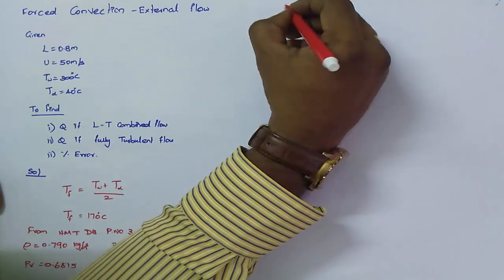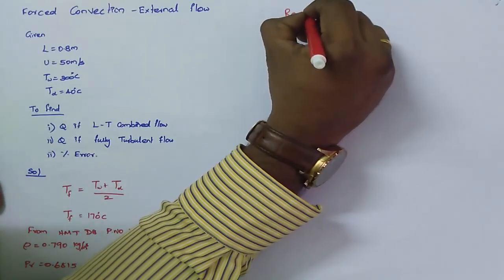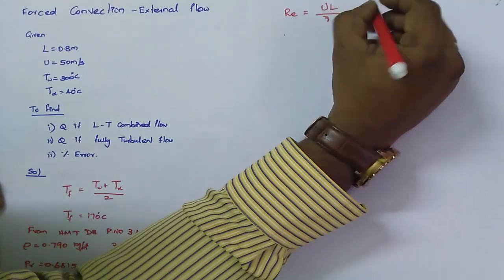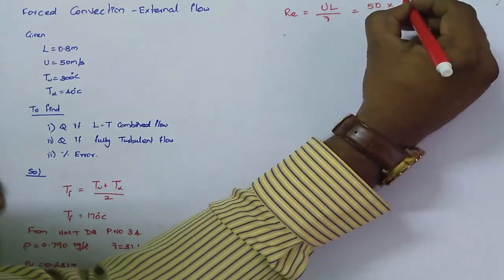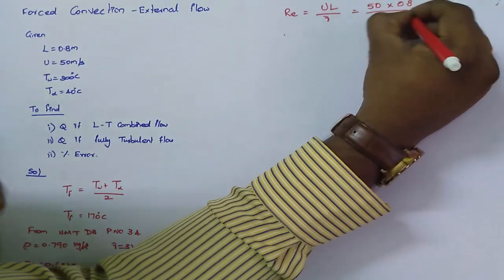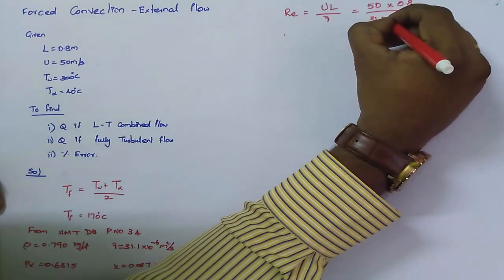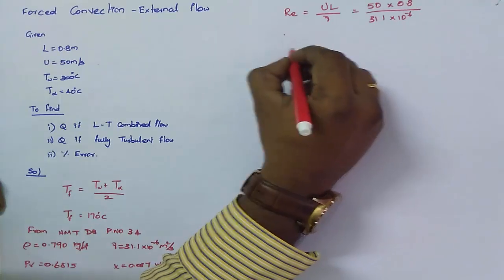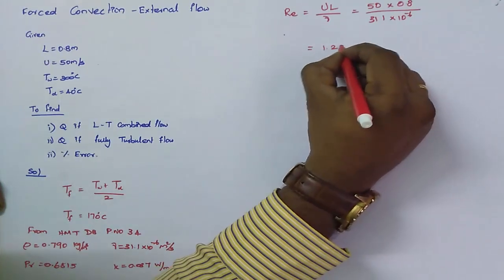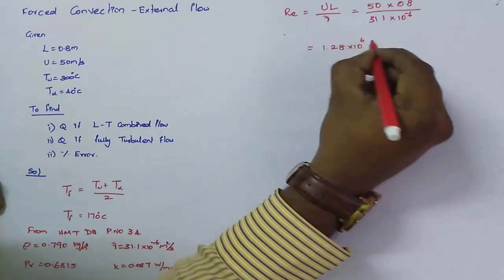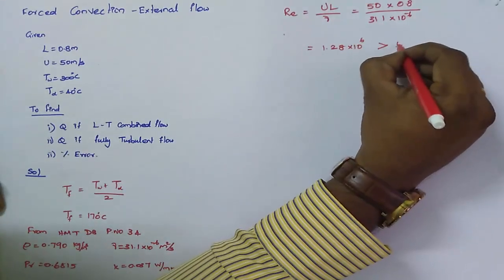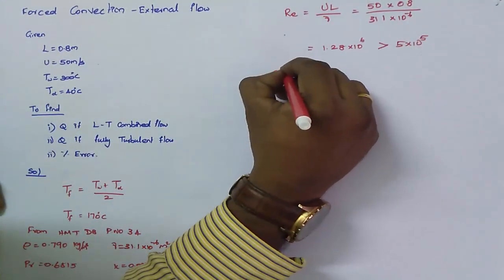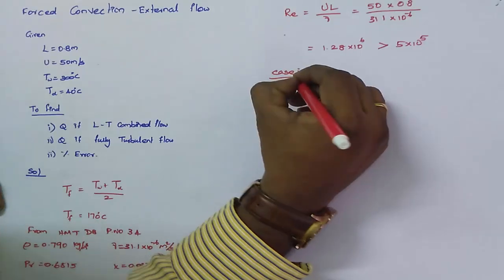Step 2 — find the Reynolds number. Re = uL/ν = (50 × 0.8) / (31.1×10⁻⁶) = 1.28×10⁶. This is greater than 5×10⁵, so the flow is mixed laminar-turbulent.